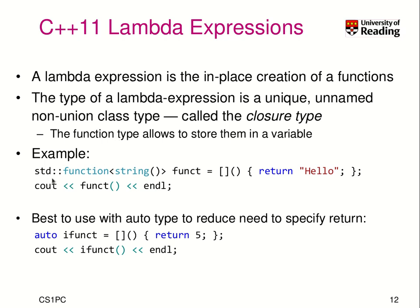Here you will see an example. I have a function that returns a string as a type. So this declares our type using this kind of template function returning a string. And this variable 'funct' then stores our lambda. This here indicates a lambda expression. As an argument it has nothing, but then we have the function body which returns hello. This clearly is the function body of a function that returns a string and that fits into our 'funct' variable.